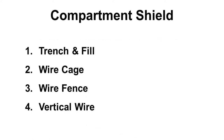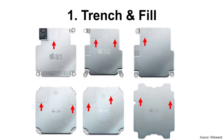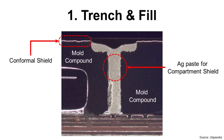There are four methods to make compartment shield: trench and fill, wire cage, wire fence, and vertical wire. Trench and fill is the most popular method and Apple Watch is a good example. You can see shallow trench with red arrows — those are compartment shield by trench and fill. The process flow is trench making by laser ablation of mold compound, silver paste fill into the trench for compartment shield, then conformal shield coating by sputtering for the package.